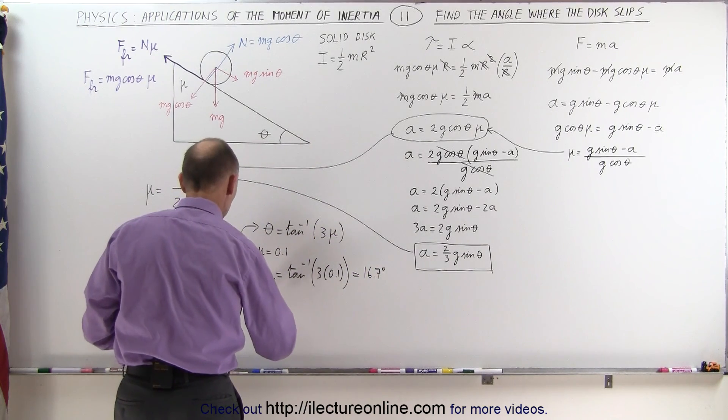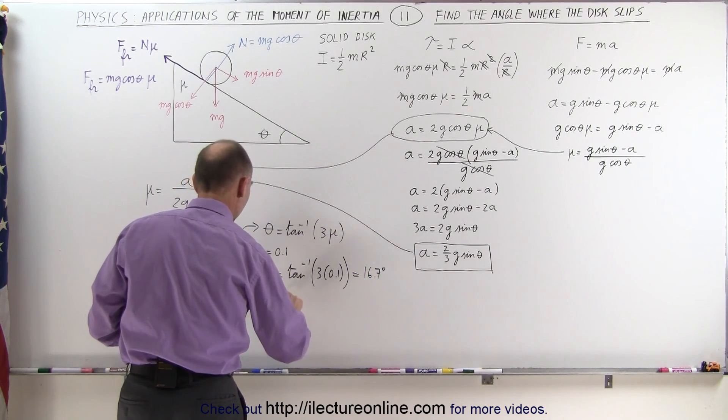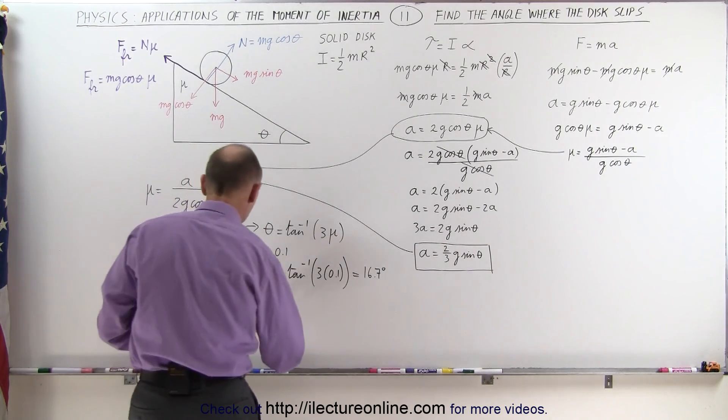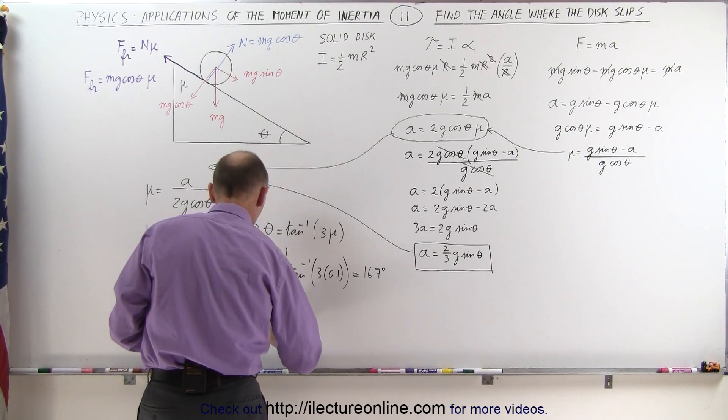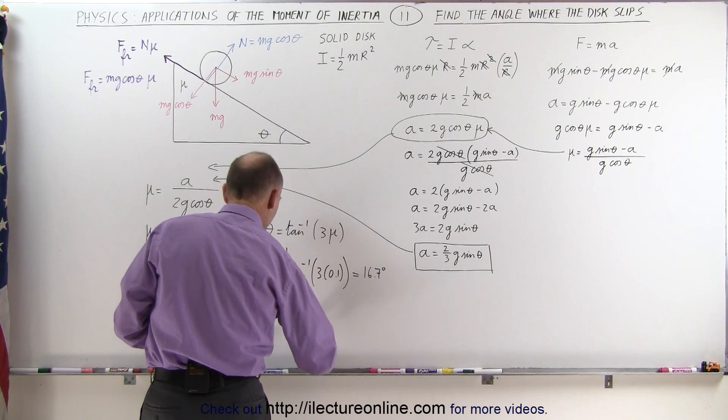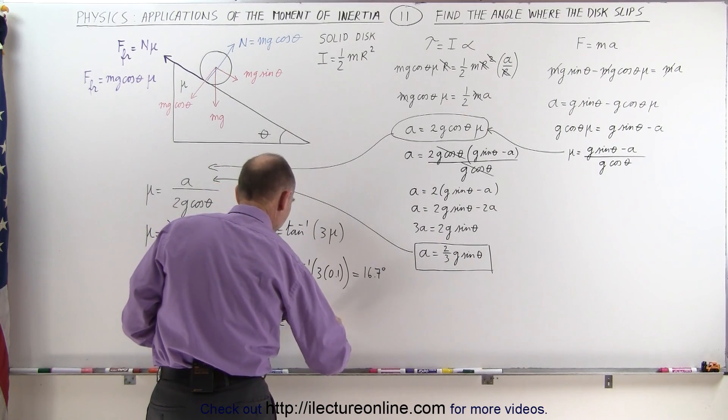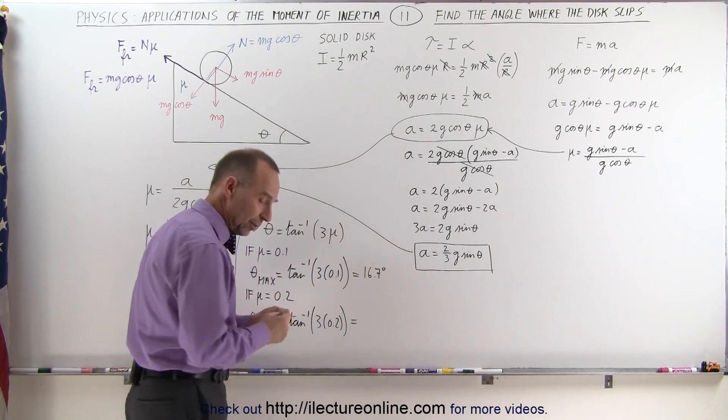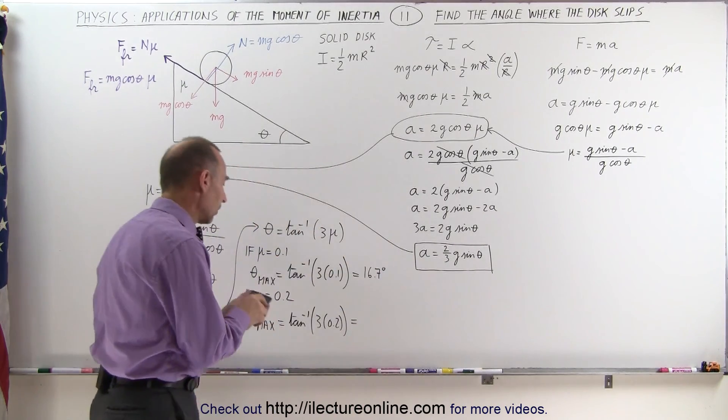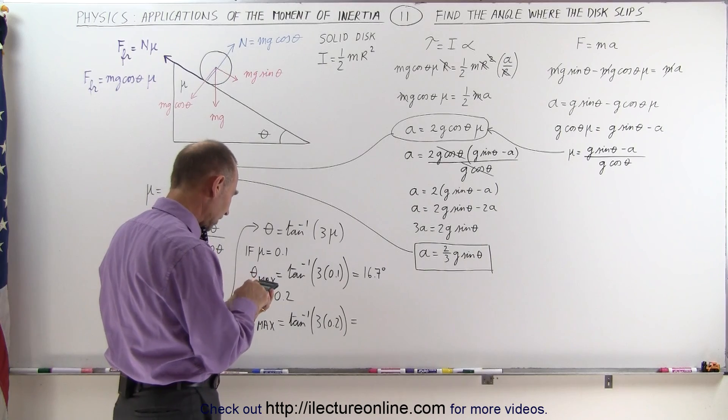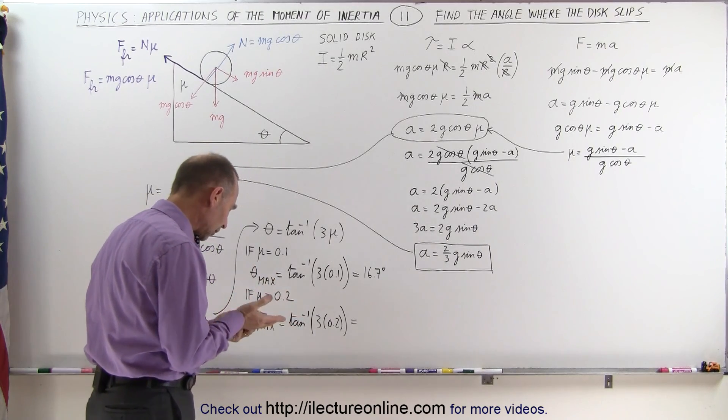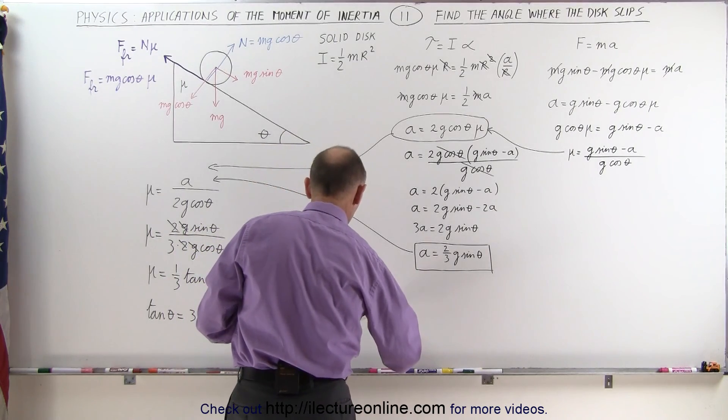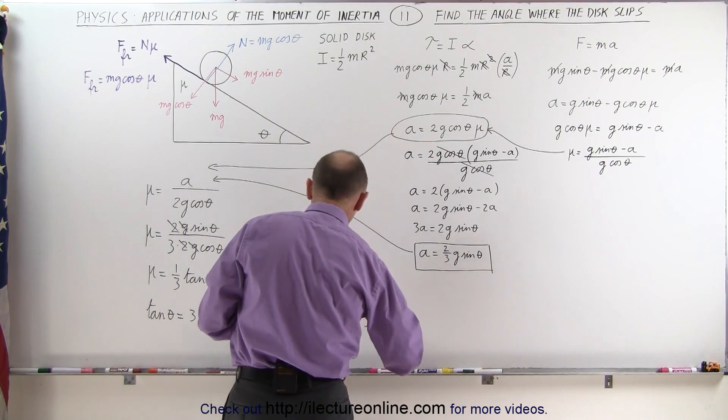Let's say that if mu was equal to 0.2, then we can have a steeper angle. How steep? Well then theta max will be equal to the arc tangent of three times 0.2. So that's 0.6, take the arc tangent of that, that gives me an angle of almost 31 degrees, 31.0 degrees.